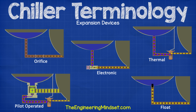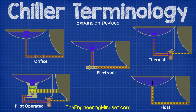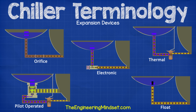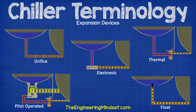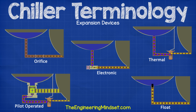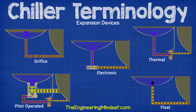Expansion valve or device. This is a device used between the condenser and the evaporator. These cause a pressure reduction in the refrigerant as well as controlling the amount of refrigerant entering the evaporator, which is used to control the superheat. There are many different types used in chillers. Some examples of chiller expansion valves and devices are orifice plate, float valves, thermal expansion valves, electronic expansion valves, as well as pilot operated thermal expansion valves.